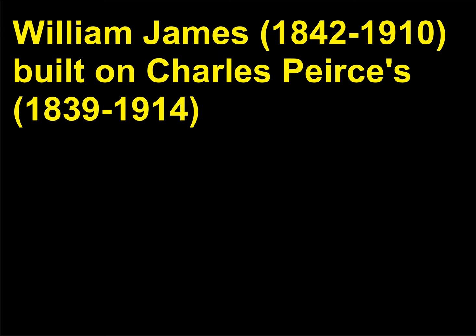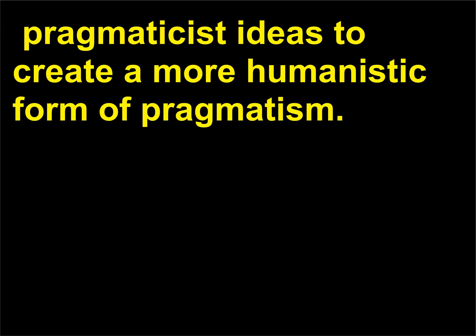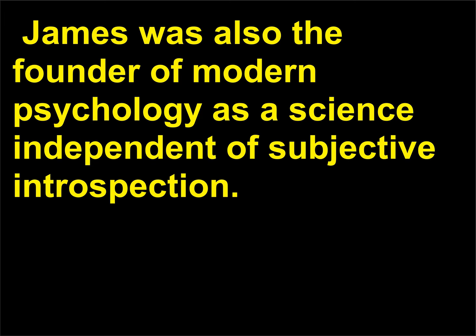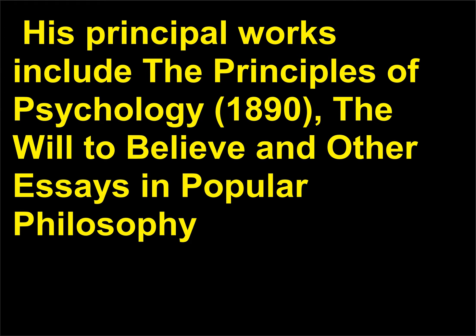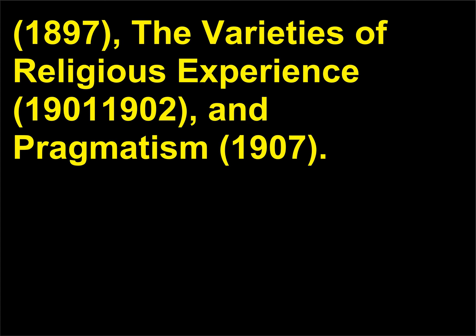Who was William James? William James, 1842–1910, built on Charles Peirce's, 1839–1914, pragmaticist ideas to create a more humanistic form of pragmatism. James was also the founder of modern psychology as a science independent of subjectivity and introspection. His principal works include The Principles of Psychology (1890), The Will to Believe and Other Essays in Popular Philosophy (1897), The Varieties of Religious Experience (1901–1902), and Pragmatism (1907).